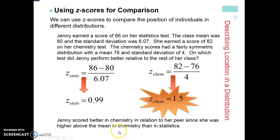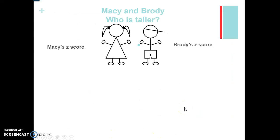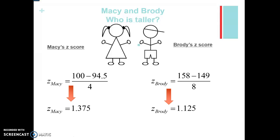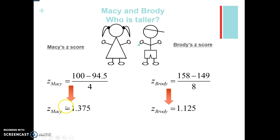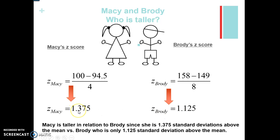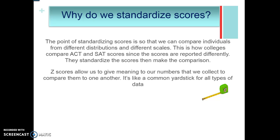Let's compare Macy and Brody to see who is actually taller relative to their peers. Macy's z-score: (100 − 94.5) / 4 = 1.375 standard deviations above the average height of three-year-olds. Brody's z-score: (158 − mean) / standard deviation = 1.125 standard deviations above the mean. Macy is actually taller relative to her peers than Brody is, because she is more standard deviations above the mean.